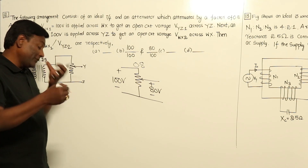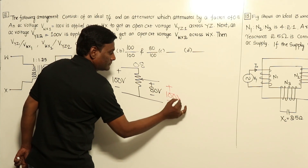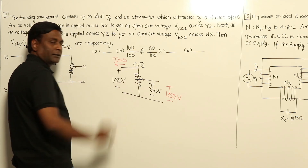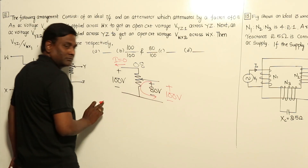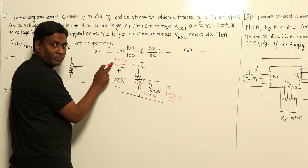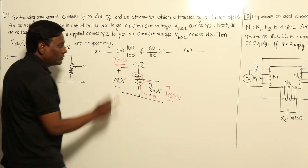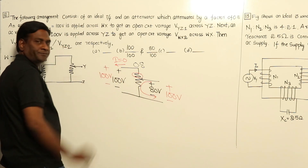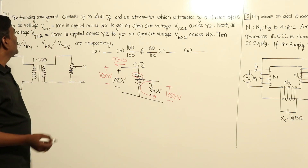Now if you reverse the supply and apply 100 volts from the other side, and no current is drawn, then by Ohm's law there will be no voltage drop. So if no current flows, 100 volts input gives 100 volts output.